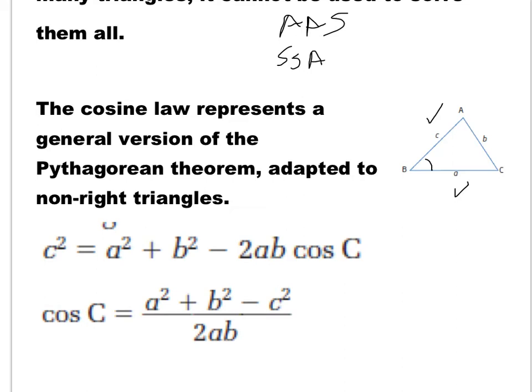Now, if you want to solve for an angle instead of a side, you isolate cos(C). Moving C² to the right gives negative C², and moving negative 2AB·cos(C) to the left makes it positive 2AB·cos(C). Then divide both sides by 2AB, giving: cos(C) = (A² + B² − C²) / (2AB).